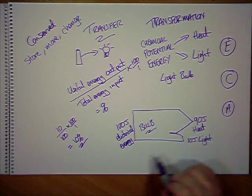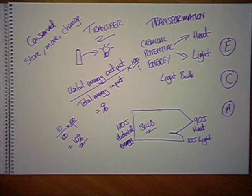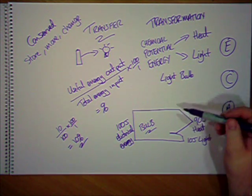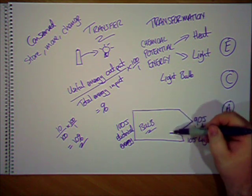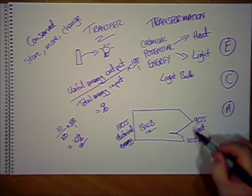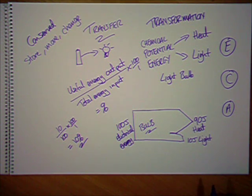Now, these things are called Sankey diagrams, and Sankey diagrams are a useful way of showing energy transfers and transformations. This one's just sketched. So, if you were drawing it to scale, you would notice that the width of the arrow is proportional to the value of the number here.